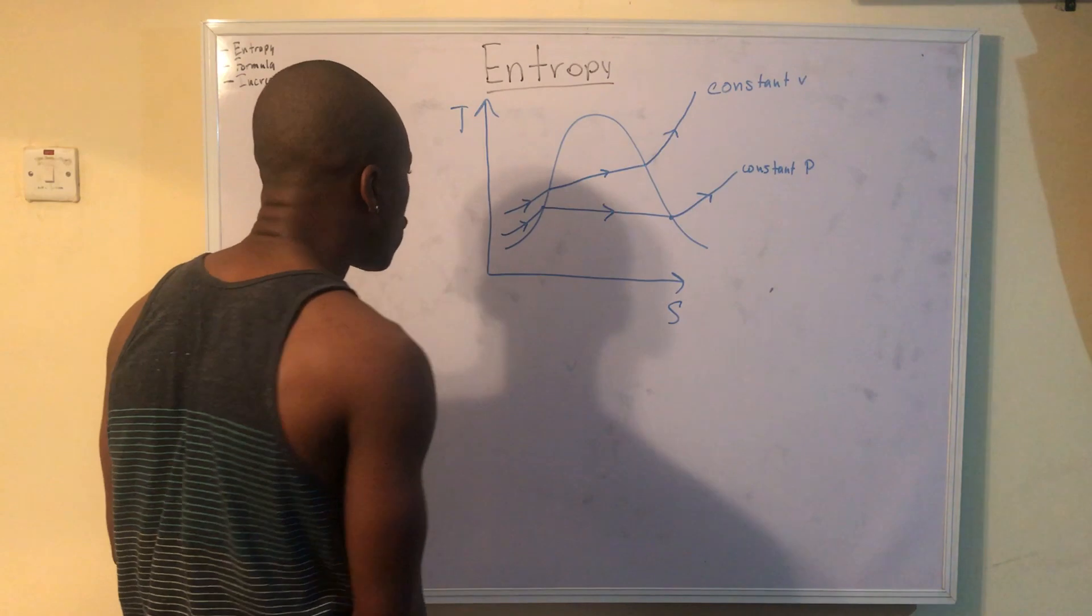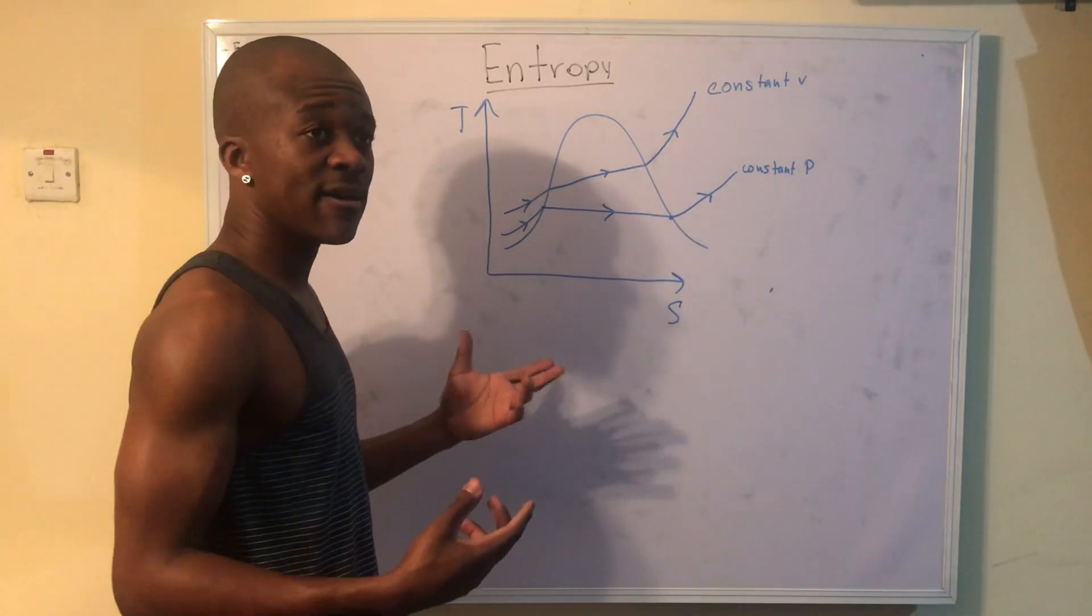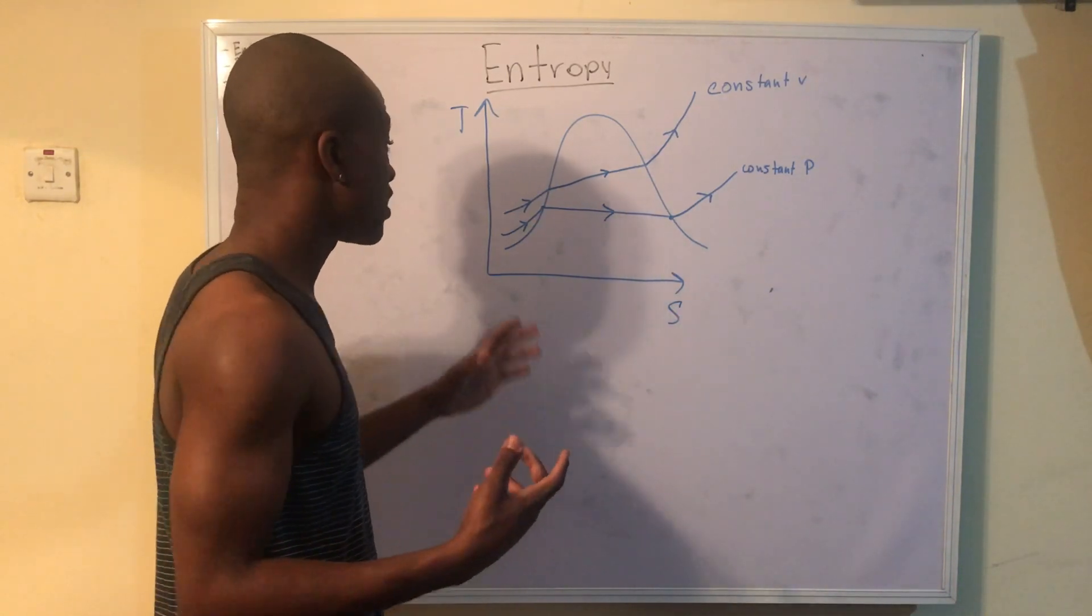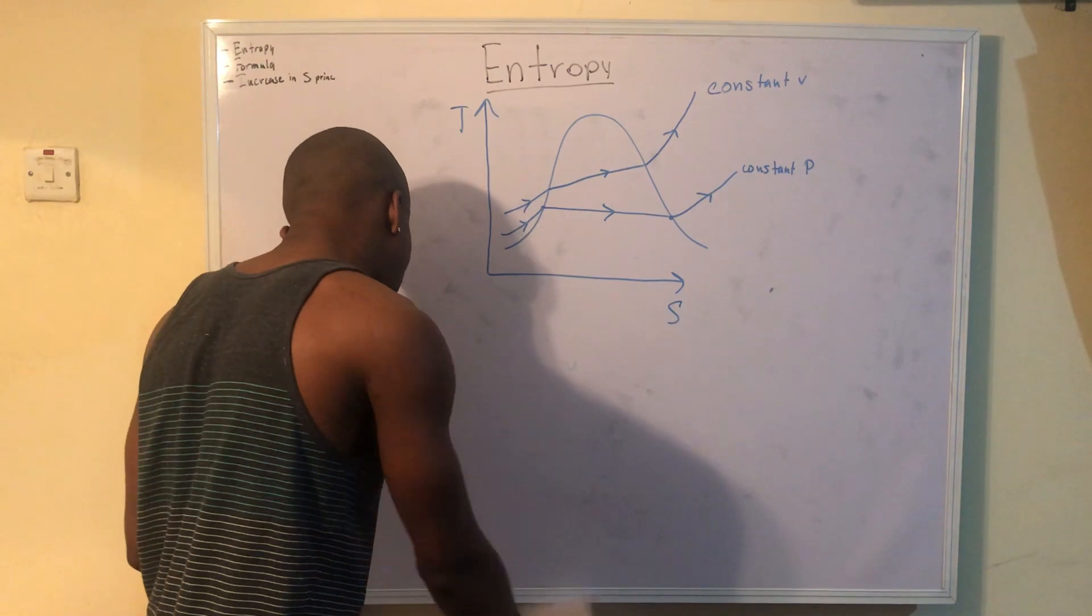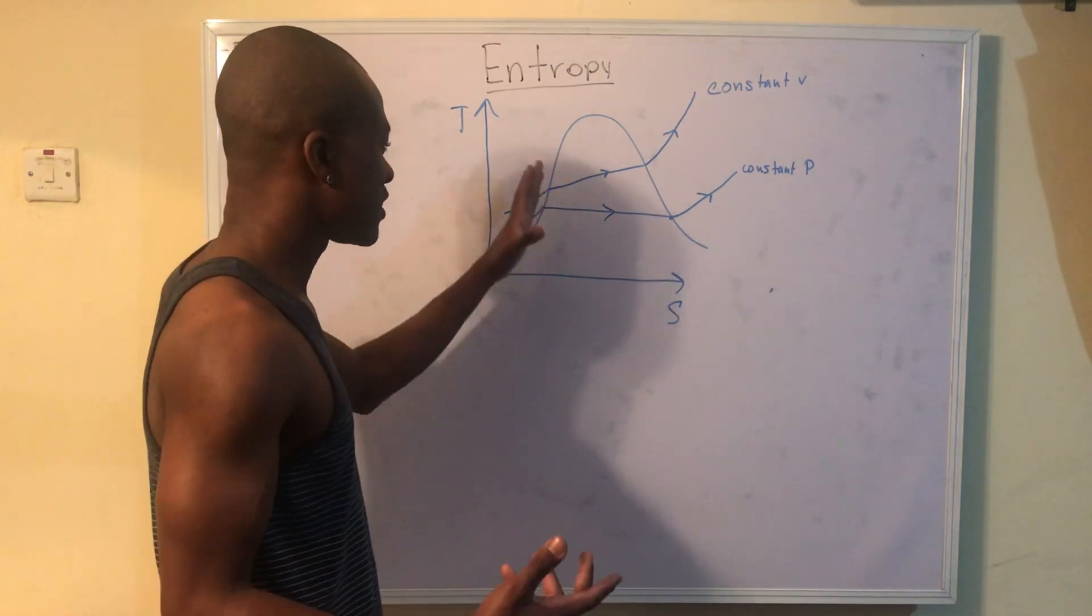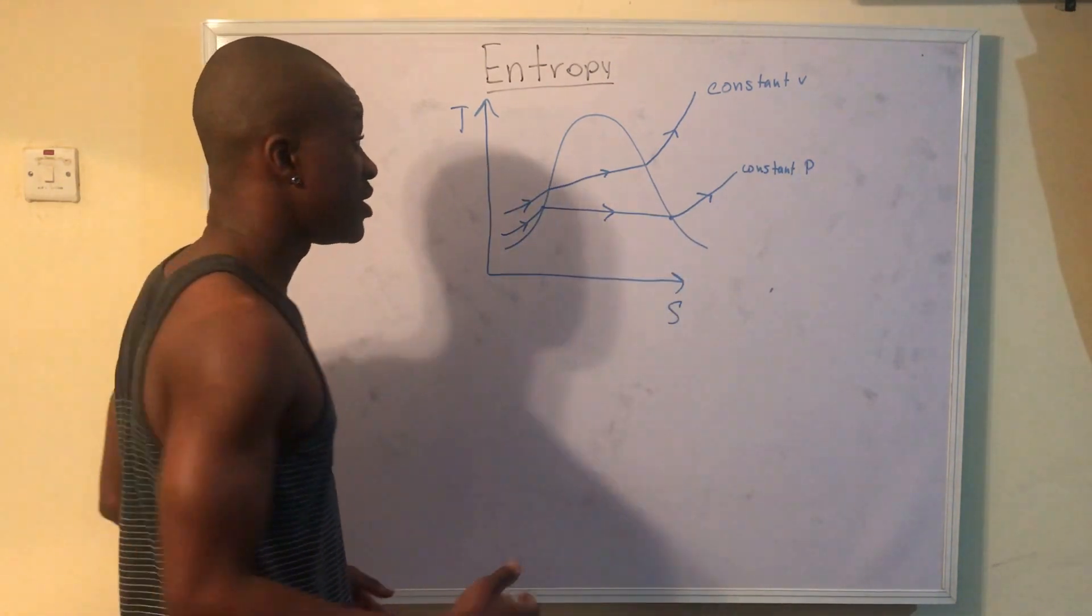And of course, for a compressed liquid, when we're dealing with a compressed liquid, to get our SF, we use, or to get our entropy when dealing with a compressed liquid, we're going to use SF at the T that we're dealing with, right? That's our liquid that we're going to be dealing with. That's what entropy we're going to be dealing with.